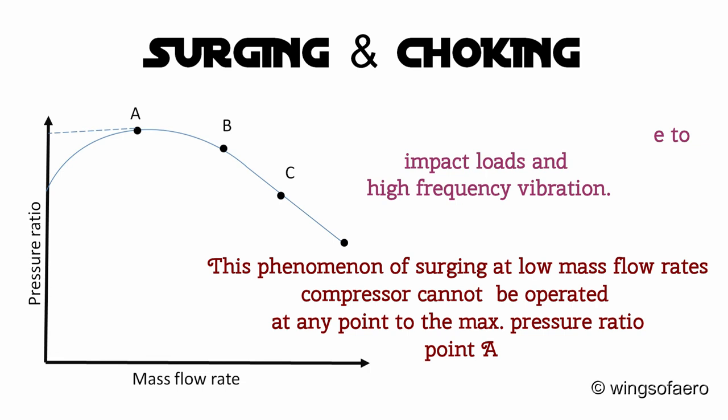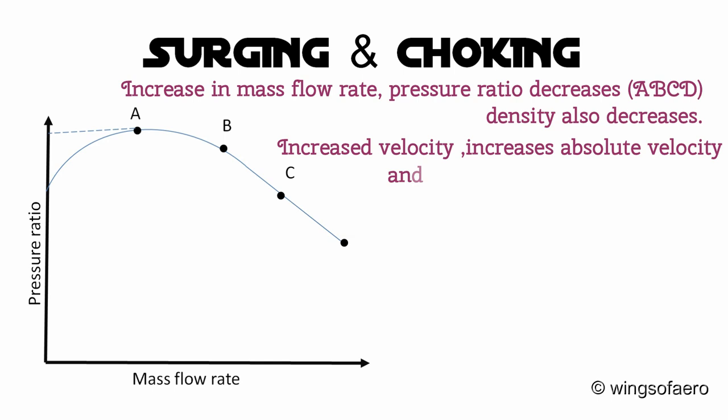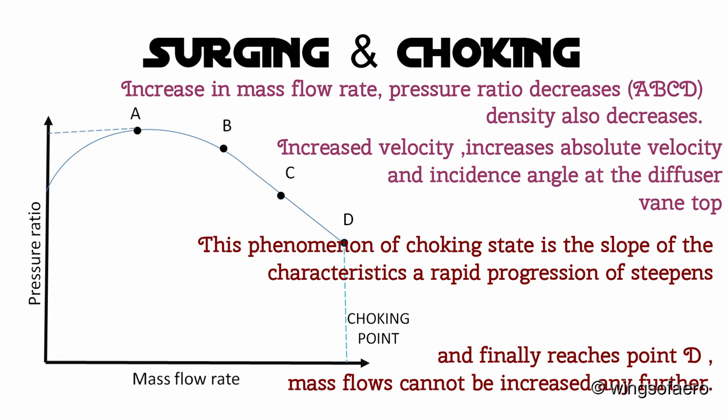With an increase in mass flow rate, the pressure ratio decreases at points A, B, C, D, and hence the density also decreases. This results in a considerable increase in velocity, increasing the absolute velocity and the incidence angle at the diffuser vane tip — a rapid process towards the choking stage. The slope of the characteristic curve therefore steepens, and finally after point D the mass flow rate cannot increase any further. The characteristic finally becomes vertical, and point D on the characteristic curve is called the choking point.